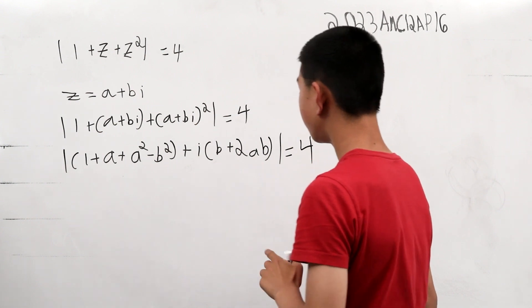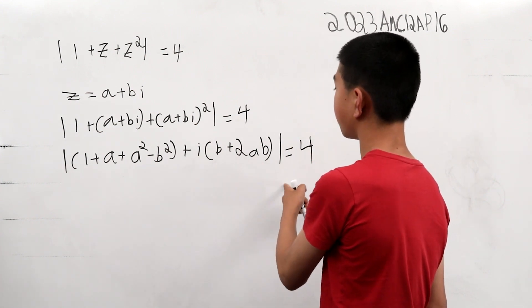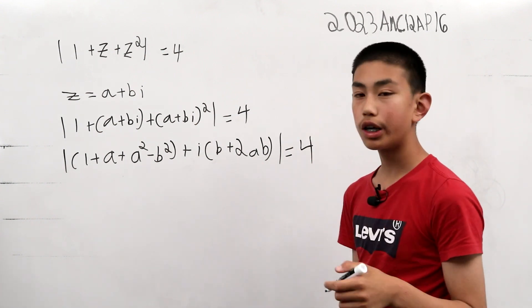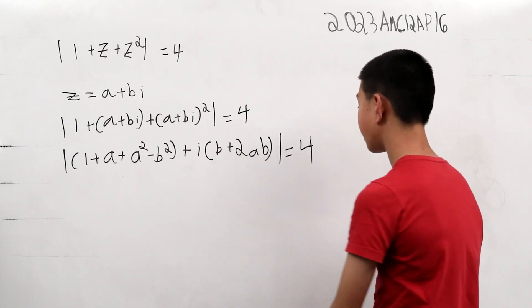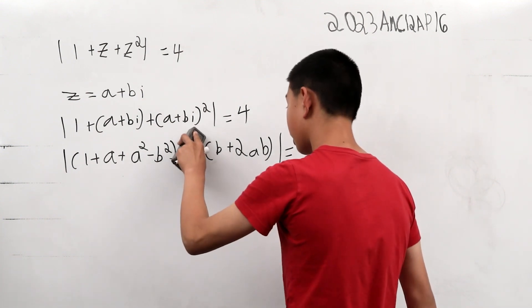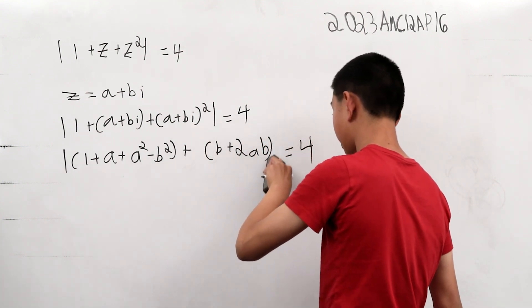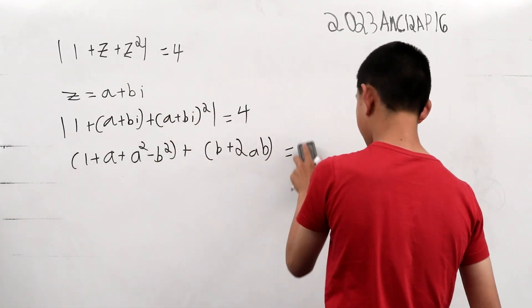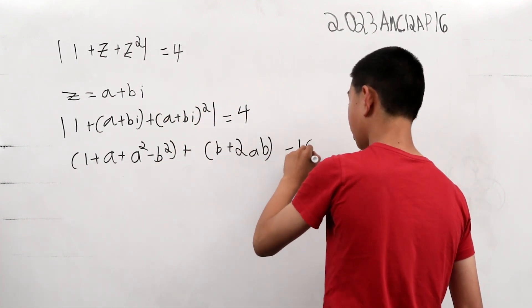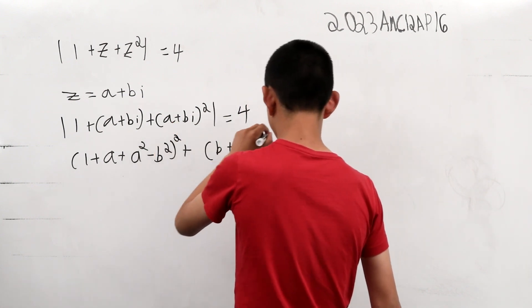Now, we don't want this absolute value here, so if we squared both sides, we could get rid of it. And if we do that, it gets rid of the i, gets rid of these two, and this becomes 16, and both of these are squared now.